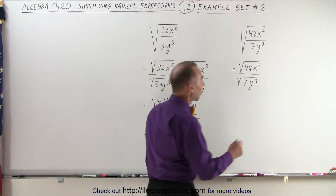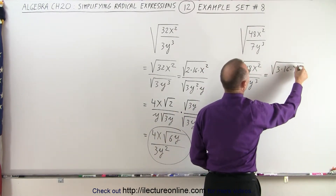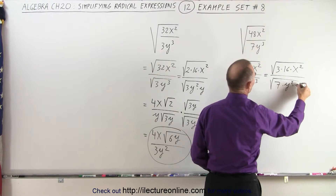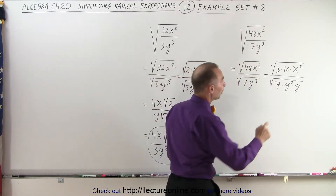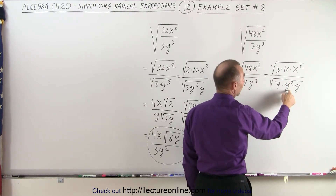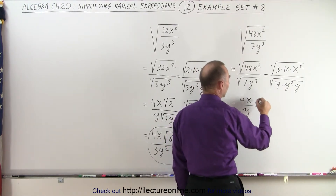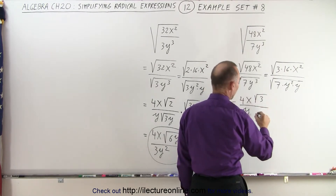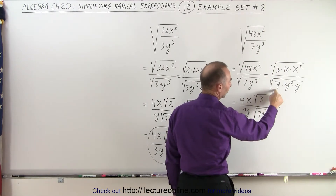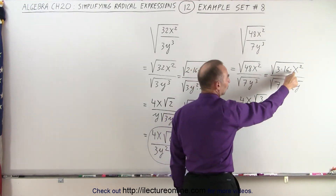Going back over here, doing the same thing. This can be written as the square root of 3 times 16 times x squared, divided by the square root of 7 times y squared times y. In the very same way, we can pull out a 4 because the square root of 16 is 4, the square root of x squared is x, and the square root of y squared is y. So this can now be written as 4x divided by y, times the square root of 3 in the numerator, and in the denominator we have the square root of 7y left. Notice we have the 3 in the numerator, the 7 and the y in the denominator.